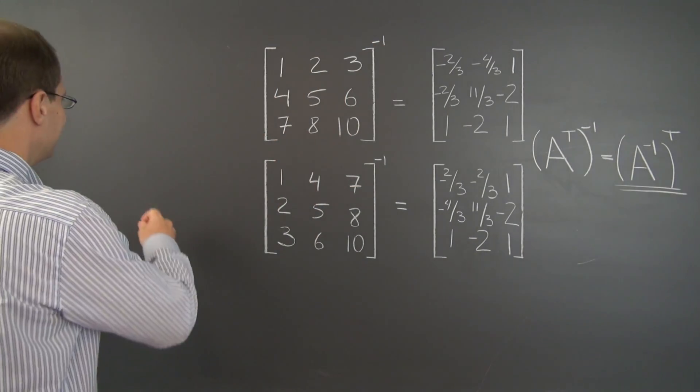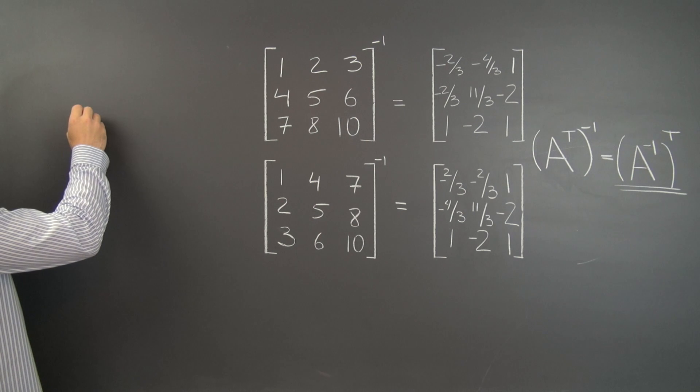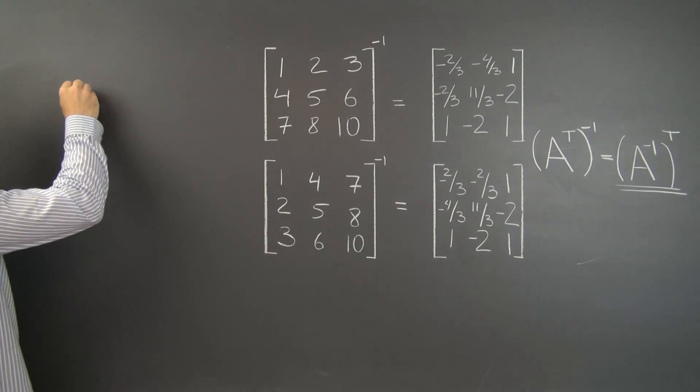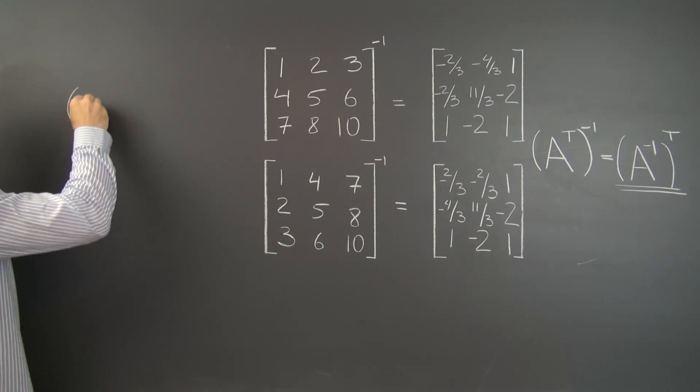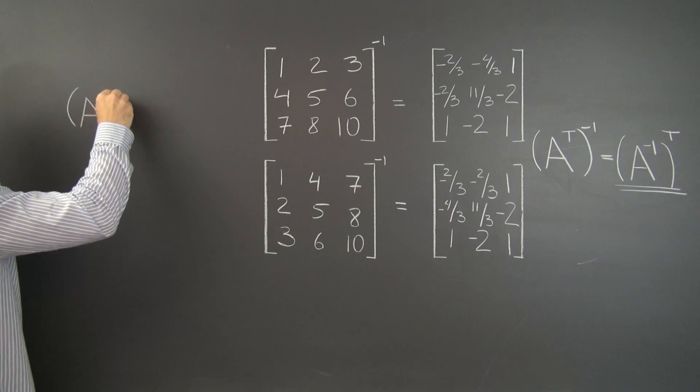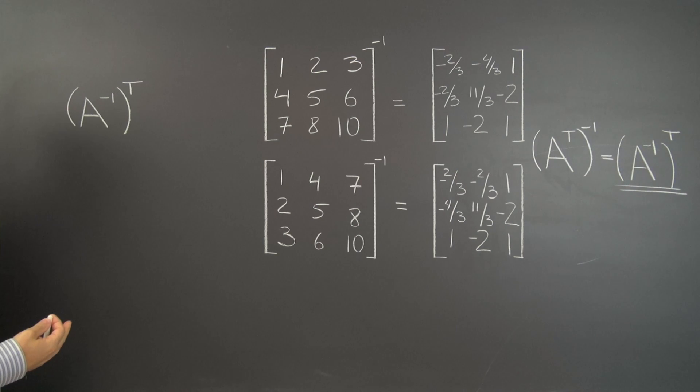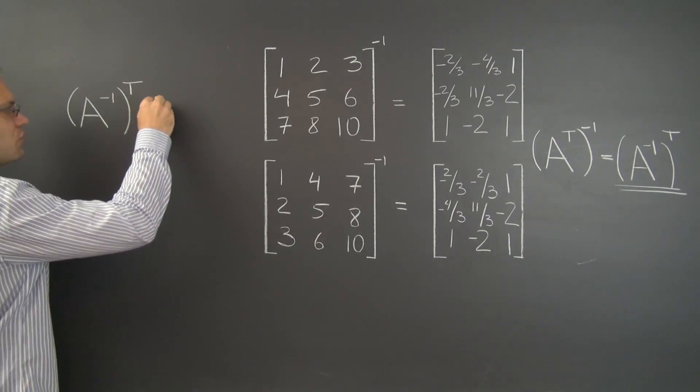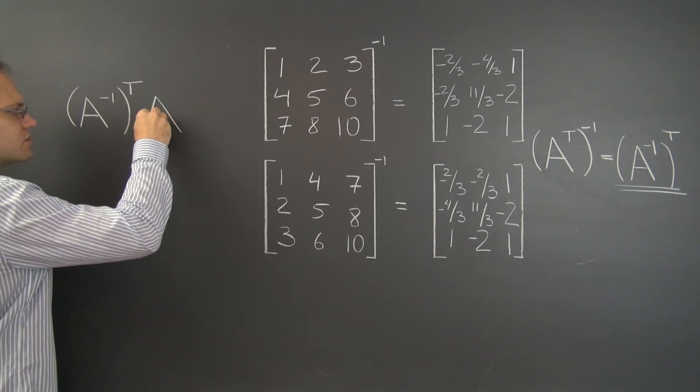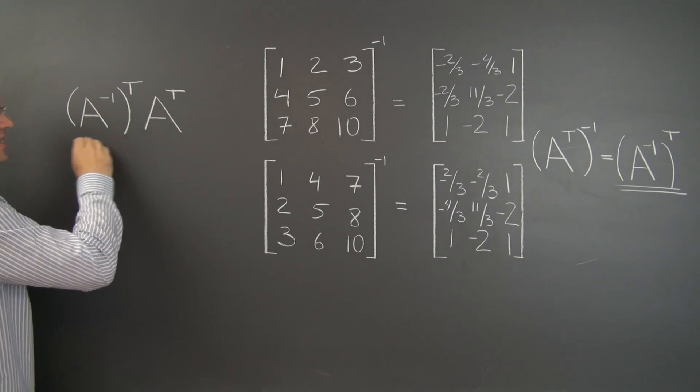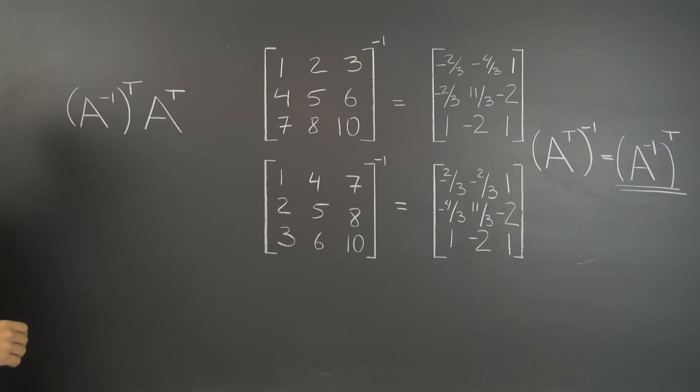So let's multiply that matrix, a candidate for the inverse of A transpose. So here we go, A inverse transpose, which is the transpose of the inverse. It's a candidate for the inverse of A transpose. So if we multiply it by A transpose, the question is, is this product the identity matrix?